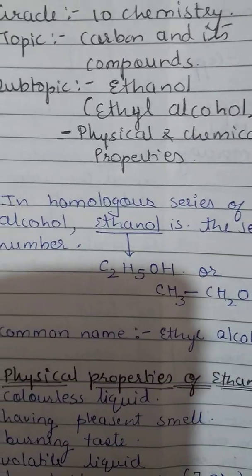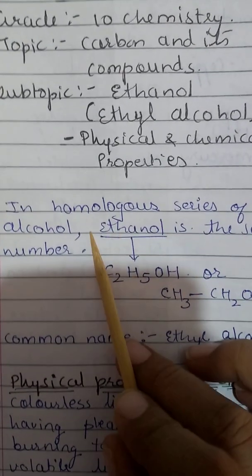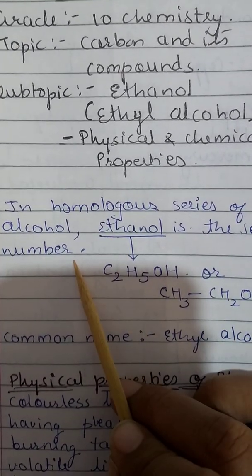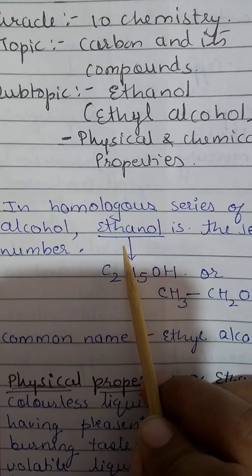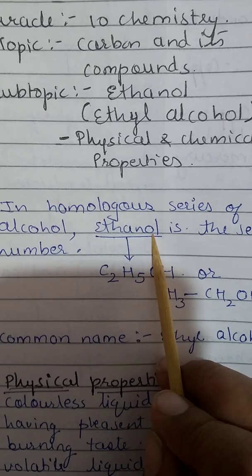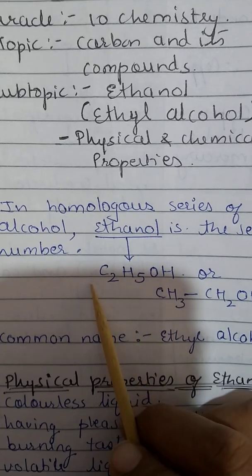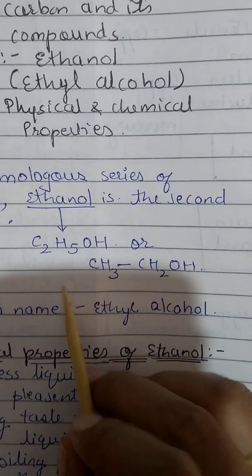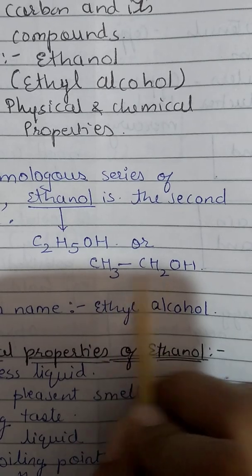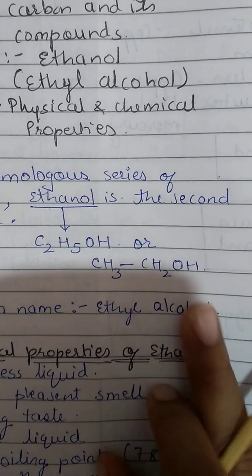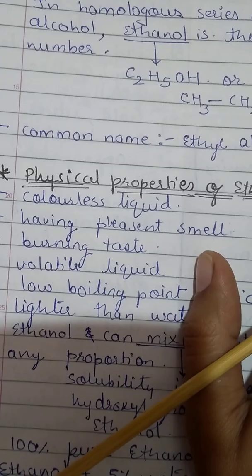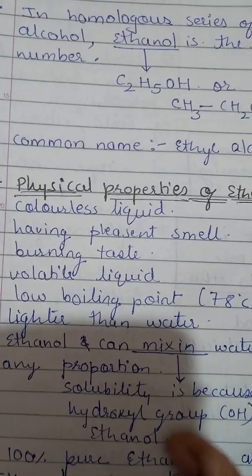In the homologous series of alcohol, ethanol is the second member. The formula of ethanol is C2H5OH, also written as CH3CH2OH. The common name is ethyl alcohol.